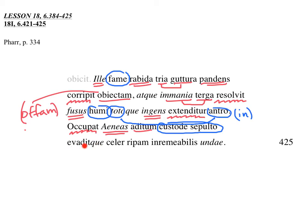And evadit, he escapes. He escapes the ripam, the shore. And he does it celer, this modifies Aeneas. Quick, he escapes the shore.